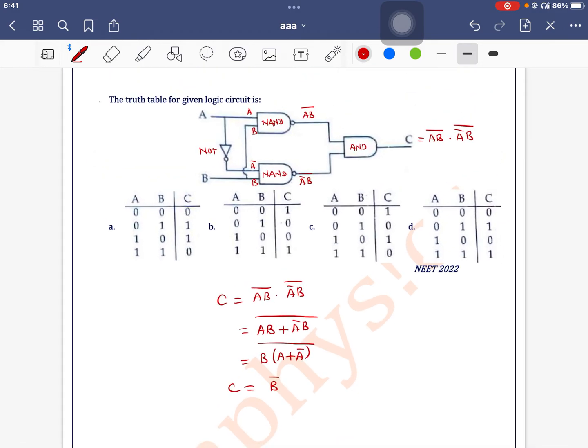So for C, we can write whenever B is 0, C will be 1. Checking the truth table: B is 0, C is 1; B is 1, C is 0; B is 0, C is 1; B is 1, C is 0. So option C is the correct one. Thank you.